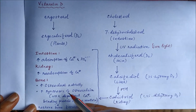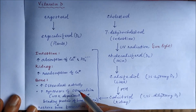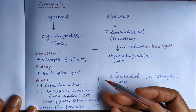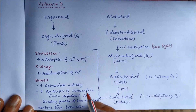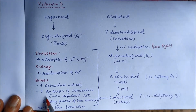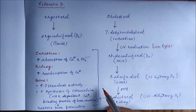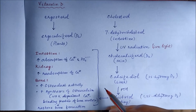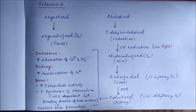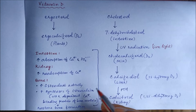Calcitriol, in the intestine, increases the absorption of calcium and phosphate. In the kidney it increases the reabsorption of calcium. In bone it increases osteoclast activity and increases the synthesis of osteocalcin — a vitamin K-dependent calcium-binding protein of the bone matrix.